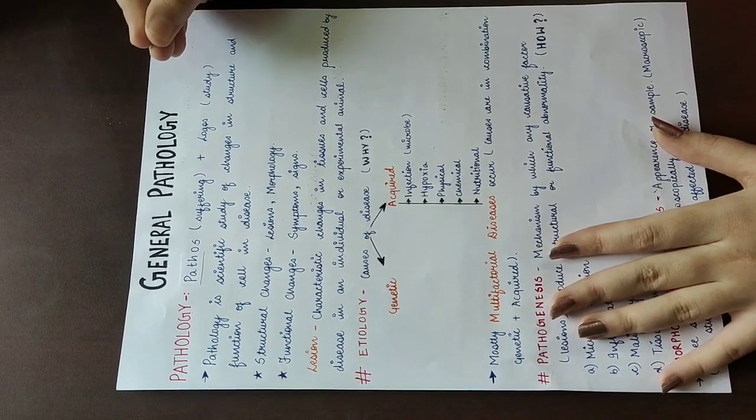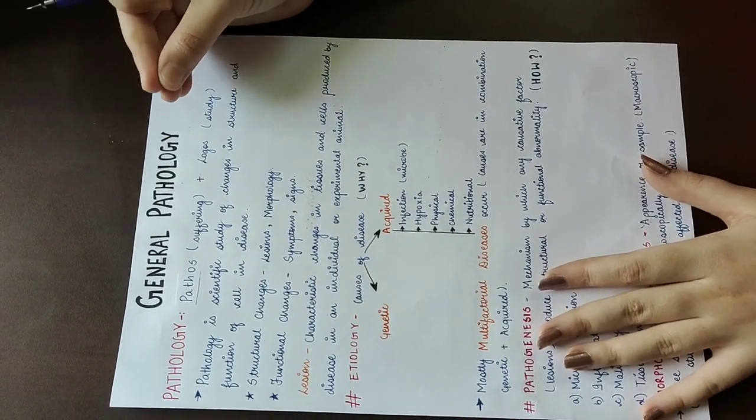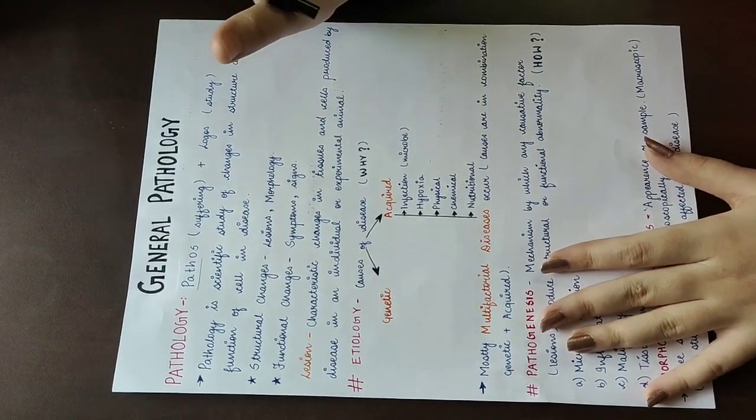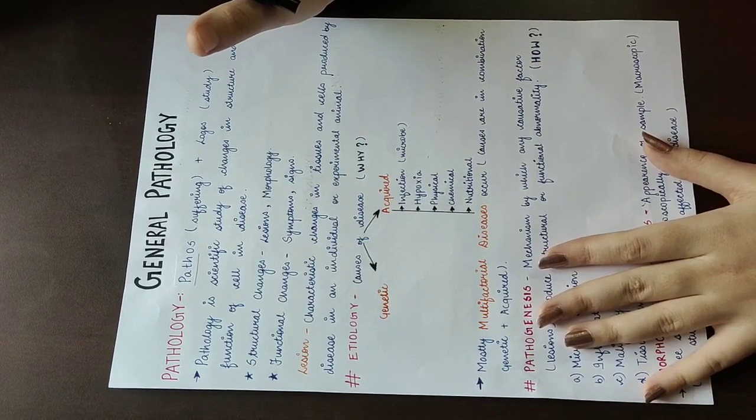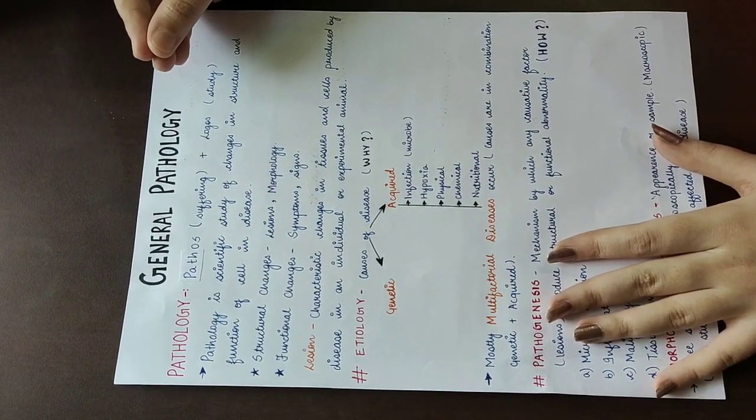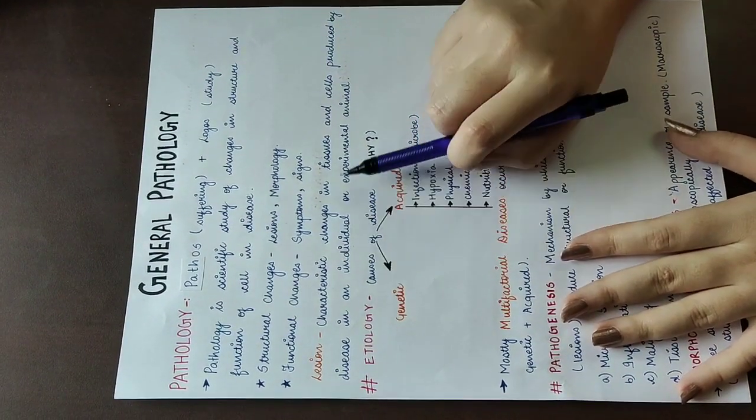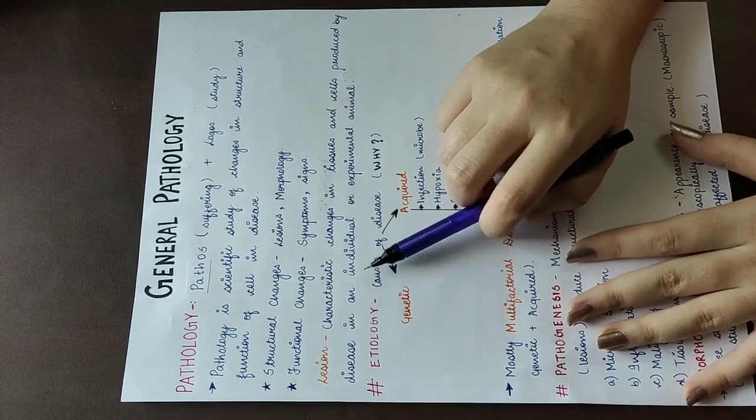Structural changes include lesions and morphology. Morphology is also called appearance, morphological changes. Lesions means wounds, cuts. But in technical terms, lesions are characteristic changes in a tissue or a cell produced by the disease in an individual or an experimental animal.